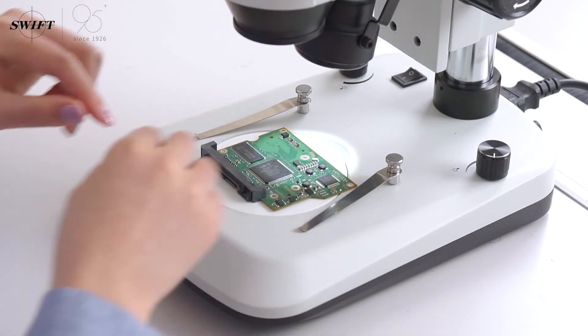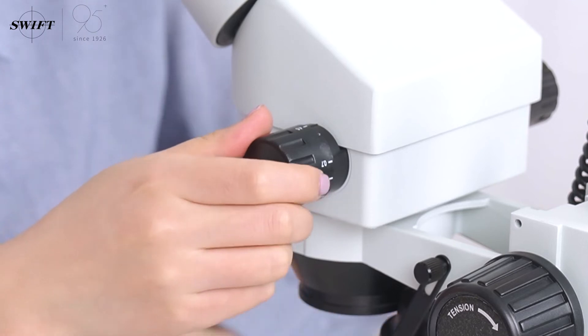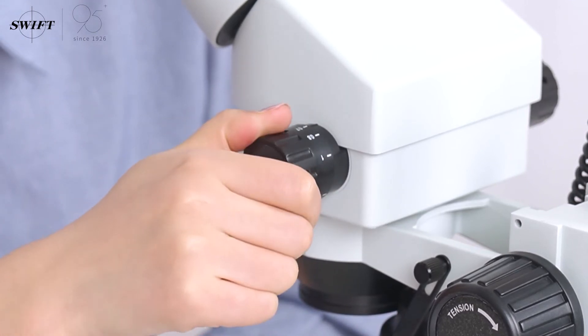Put the industrial circuit board to be observed on the workbench. Adjust the zoom hand wheel to low magnification and use a large field of view and a large depth of field to find the target.